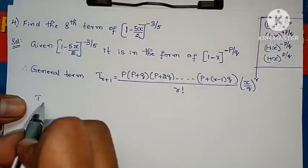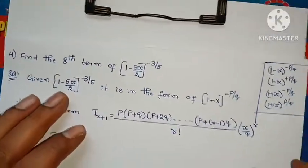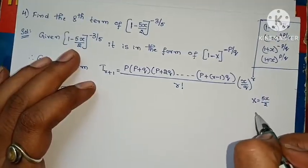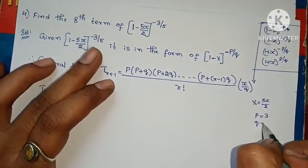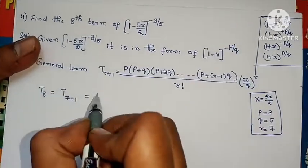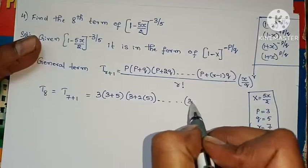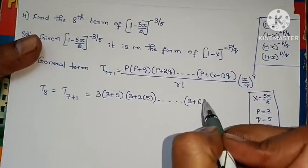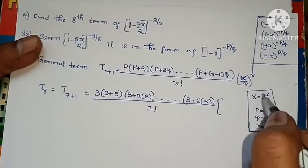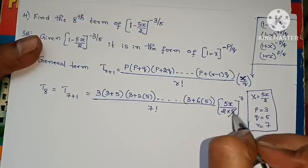For the 8th term, T8 = T(7+1), so r = 7. Compare with the formula: x here is 5x/2. P value is 3, Q value is 5, R value is 7. Substituting: p = 3, then 3, 3+5 = 8, 3 + 2×5 = 13, and so on up to 3 + (7−1)×5 = 3 + 30 = 33. Denominator is 7 factorial. x term is (5x/2)^7.